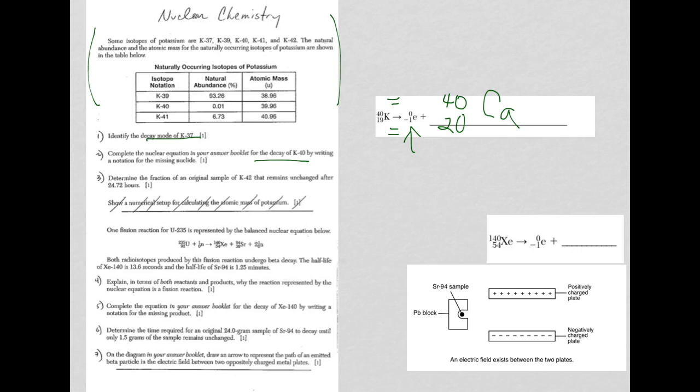Let's take a look at question 3. This will show up again and again as well. This is a half-life question. It's asking you to determine the fraction of the original sample of potassium-42 that remains unchanged after 24.72 hours.